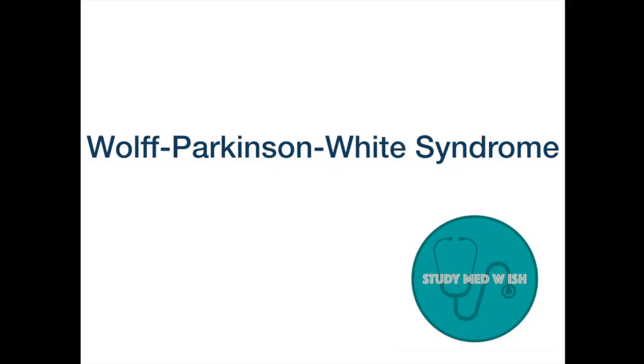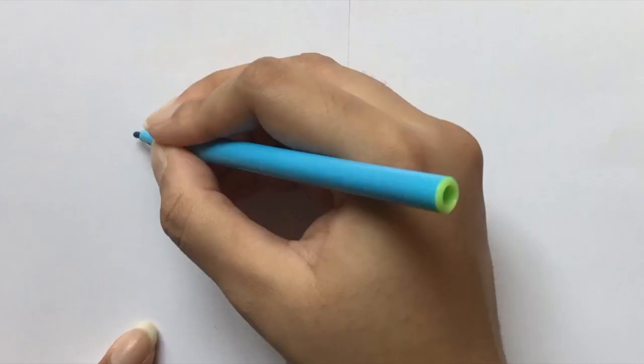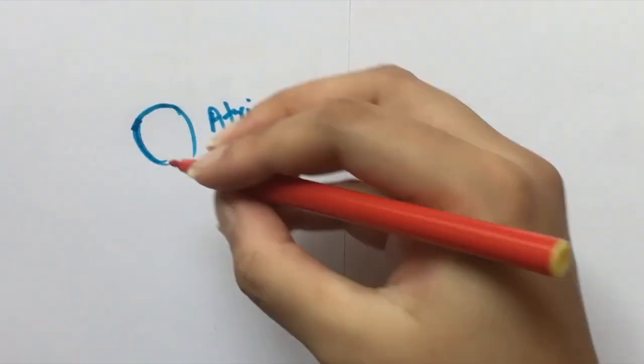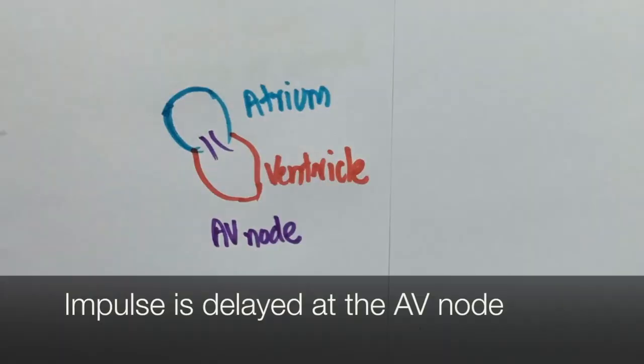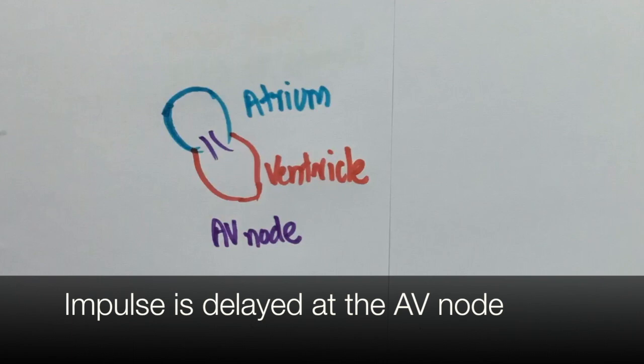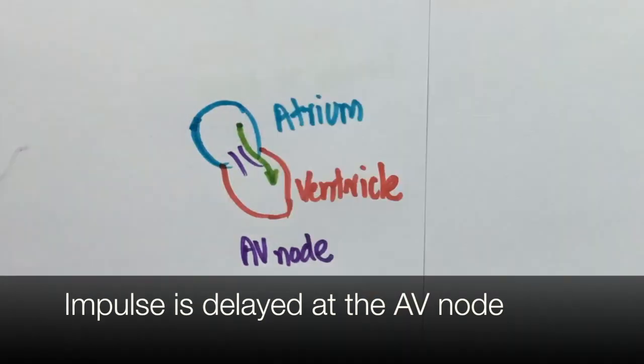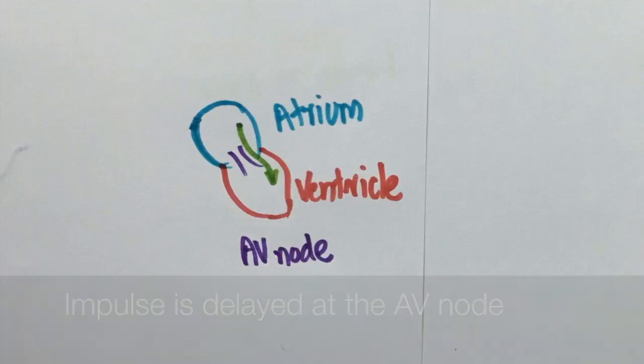Wolf-Parkinson-White syndrome is the first one on our list. Usually the impulse moves from the atria to the ventricle via the AV node. The impulse is usually delayed at the AV node. In Wolf-Parkinson-White syndrome, there is an accessory pathway between these two chambers of the heart. So the impulses bypass the AV node and directly enter the ventricles. This way the ventricles begin to contract earlier than usual.